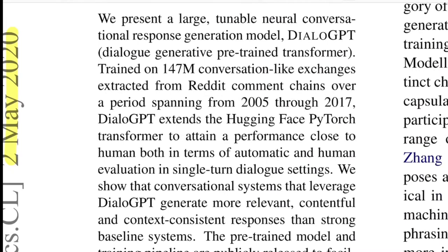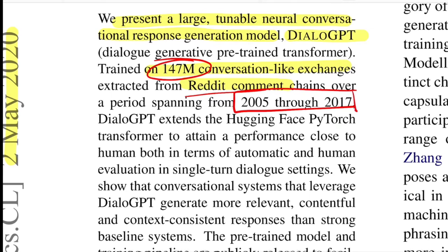From the abstract: they present a tunable neural conversational response generation model, DialoGPT, trained on 147 million conversational exchanges from Reddit subcomments scraped from comment chains spanning 2005 to 2017. The model attains performance close to humans in both automatic and human evaluation for single-turn dialogue settings.